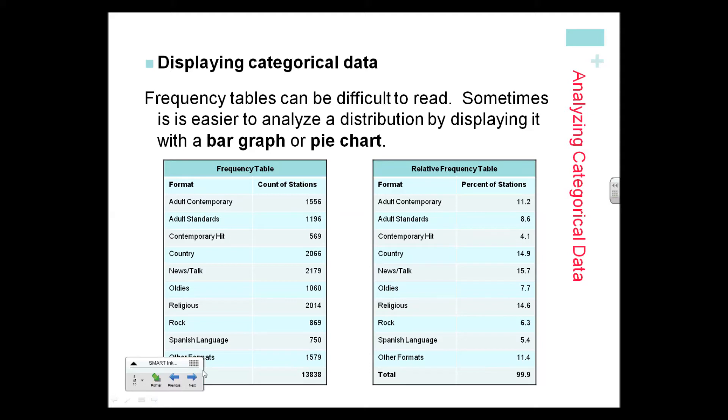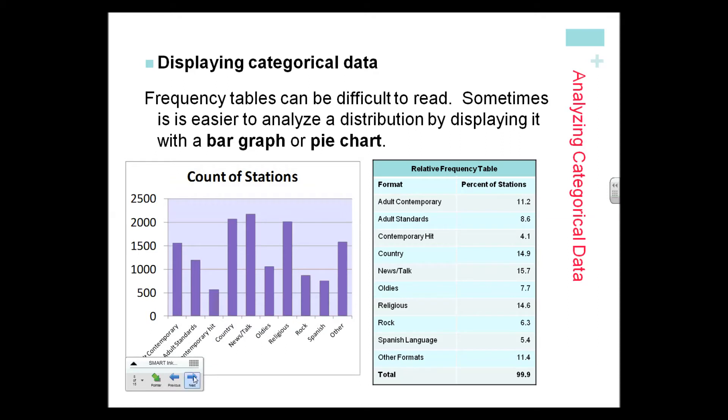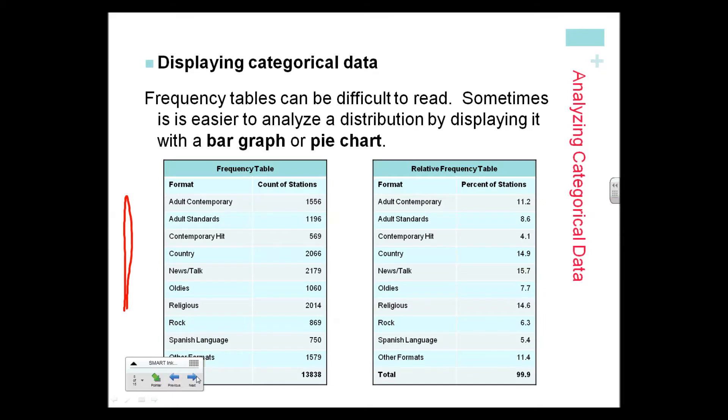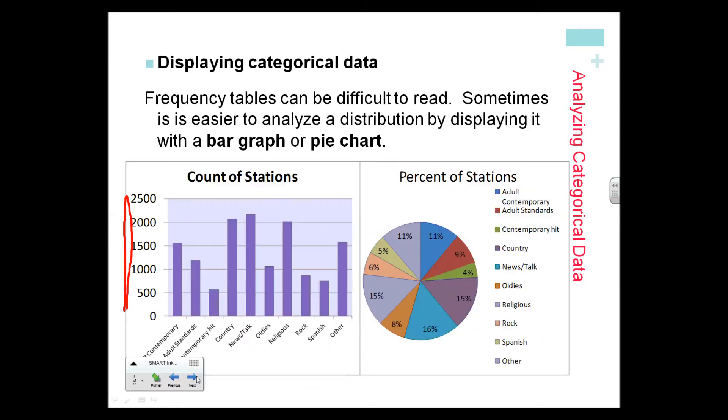Categorical data is displayed in bar graphs or pie charts. It's always better to use percents. You can use percents on the vertical axis of your bar graph. Percents are always used in a pie chart. We will not do those much in class—they just take so much time.